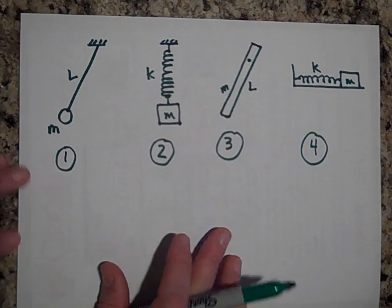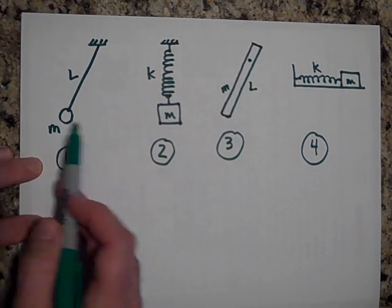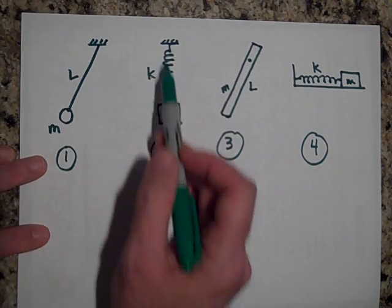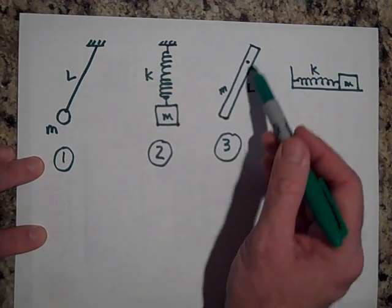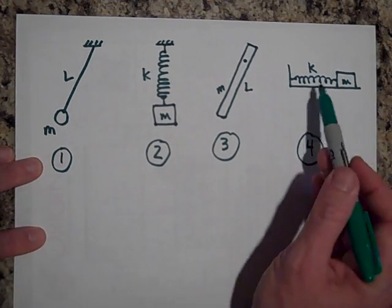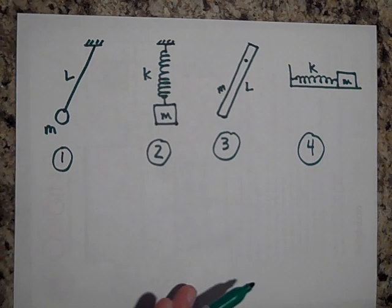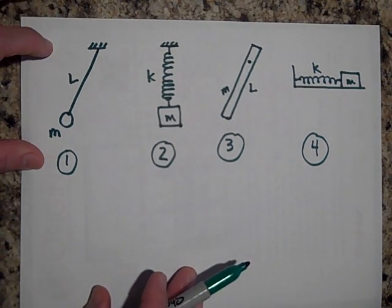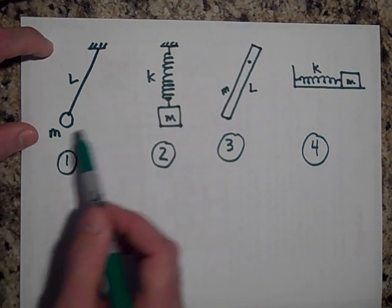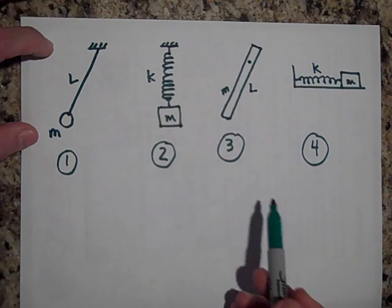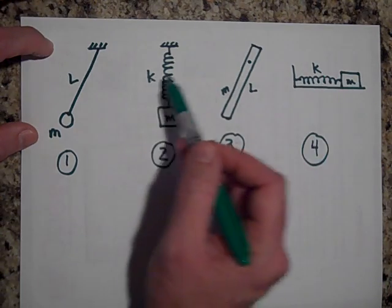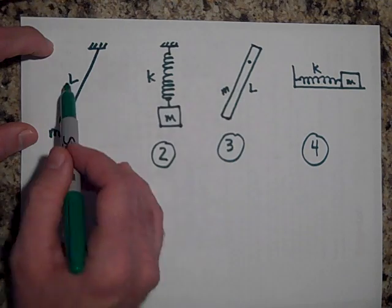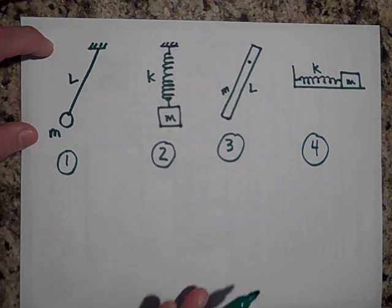Moving right along, we have four systems: a simple pendulum swinging back and forth, a mass and spring on a horizontal frictionless surface, a physical pendulum, and a mass and spring oscillating vertically. These all have the same mass, the same K values, and the same L values.